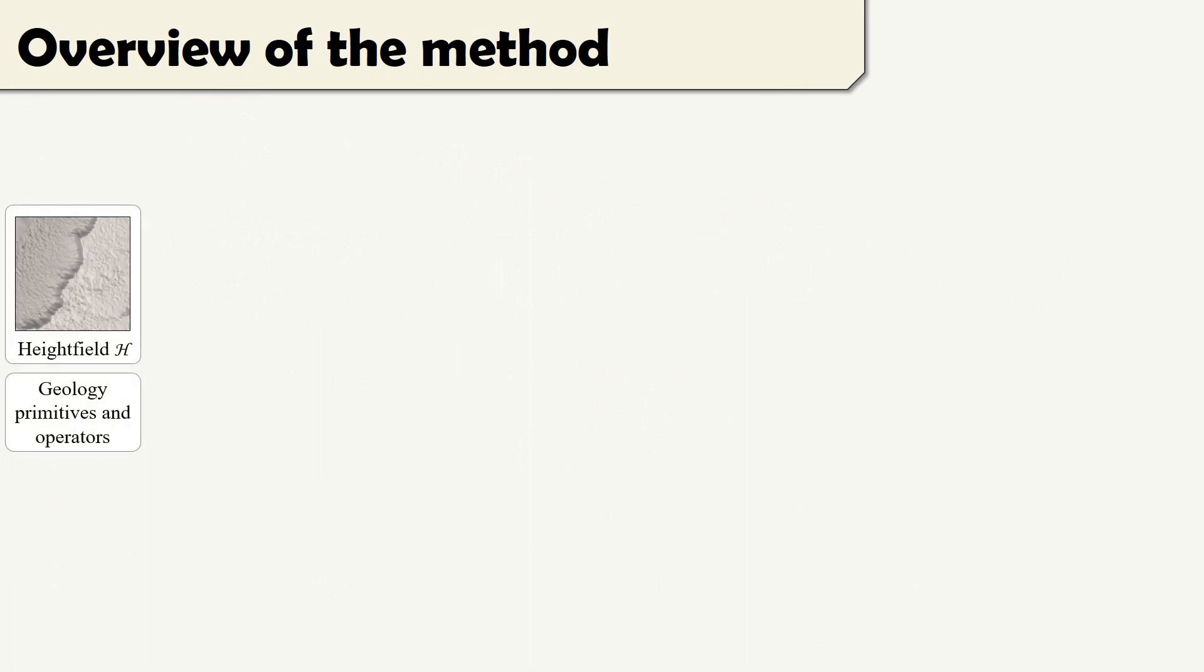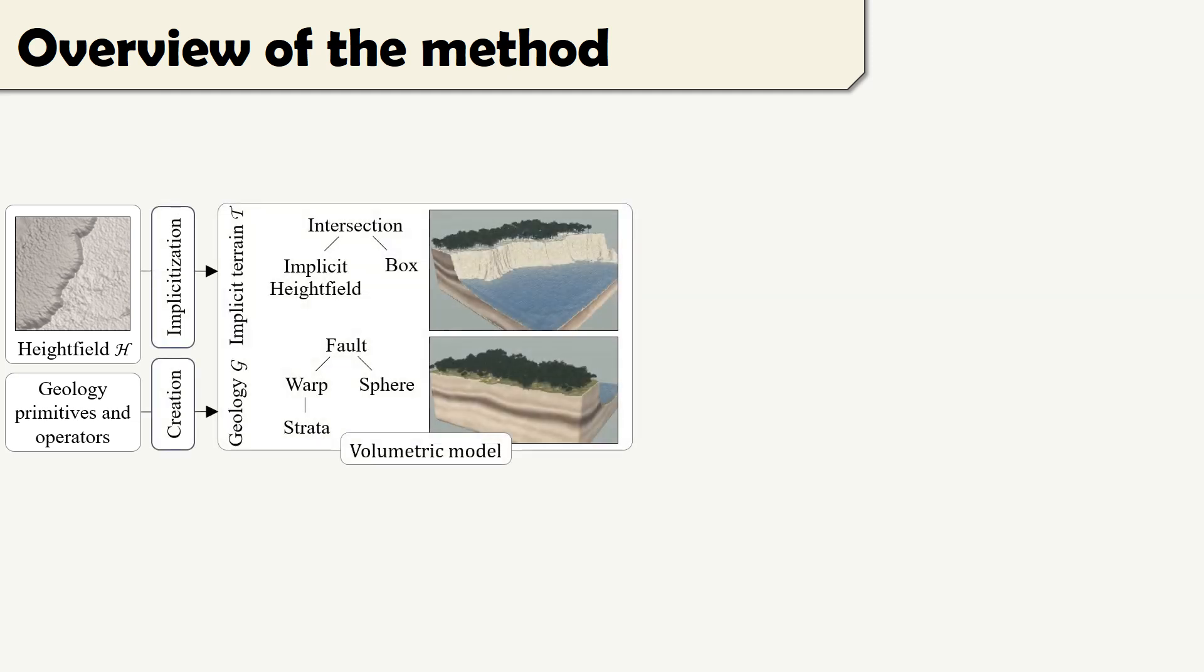We start with an initial height field and an implicit construction tree representing the geology of the scene. This height field is transformed into a volumetric model by combining an implicit box and a specific implicit primitive for 2D terrains.